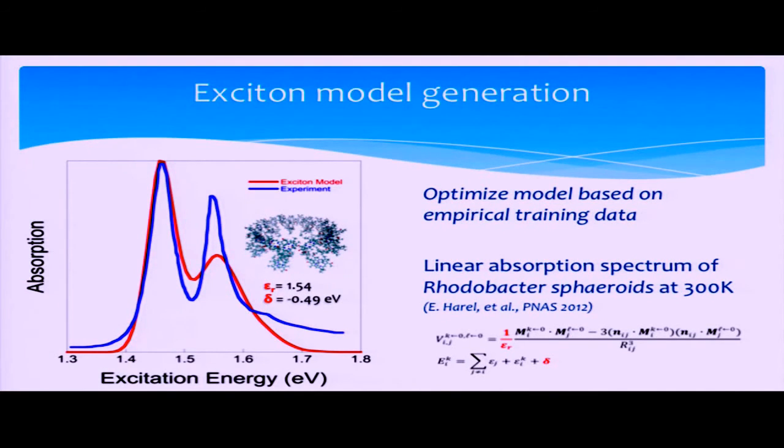So one of the most important attributes of this method is the ability to generate a model for each individual experimentally observable system. The way we do this is by choosing two static parameters and training our model based on empirical training data, which comes from an observable physical quantity. In this case, we've chosen the linear absorption spectrum taken from a photosynthetic bacteria at room temperature.